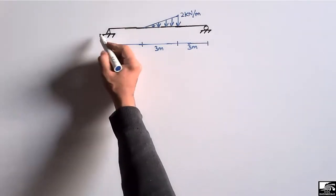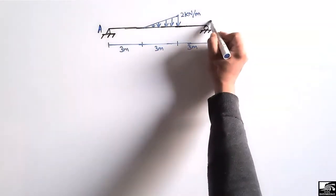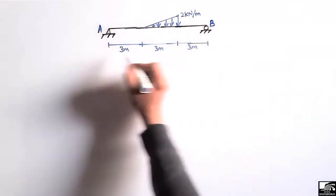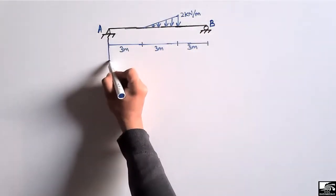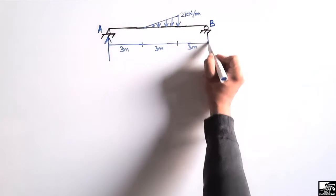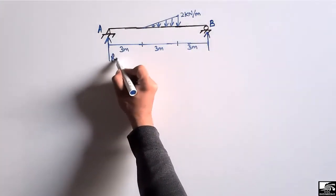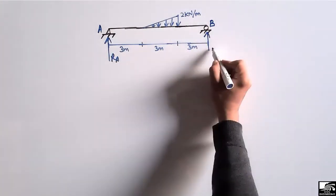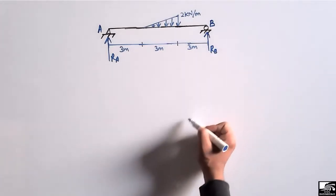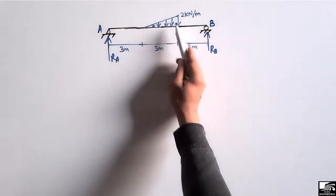First of all we are going to find out the support reactions. Let's consider this is support A and this is support B. They will resist this load, so it will be Ra and Rb.